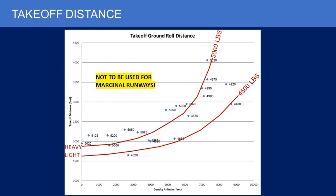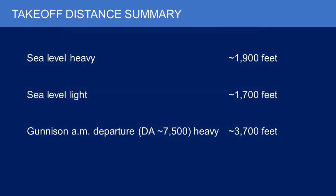Here's all the takeoff distance data. The y-axis on the left is takeoff distance in feet; the x-axis at the bottom is density altitude. The points are labeled with actual takeoff weight in pounds. This is hand-drawn and hand-contoured. These are roughly my heavy 5,000-pound line and my light 4,500-pound line, and it behaves as you'd expect: at near sea level density altitude there's not much difference, but at 7,000 feet density altitude the airplane is way more weight sensitive. At sea level, heavy versus light, somewhere between 1,700 to 1,900 feet — let's call it around 2,000 feet.